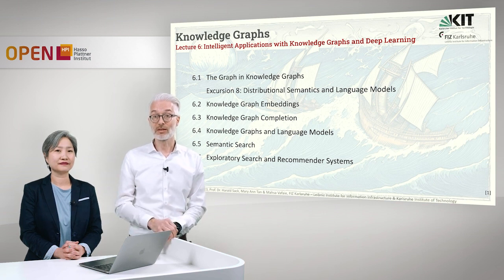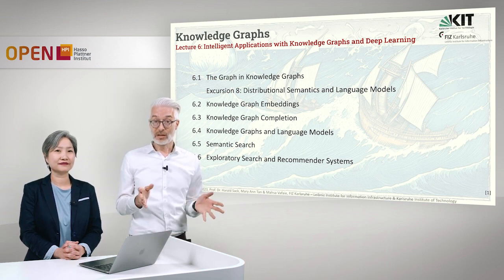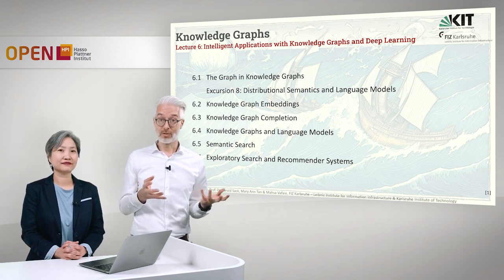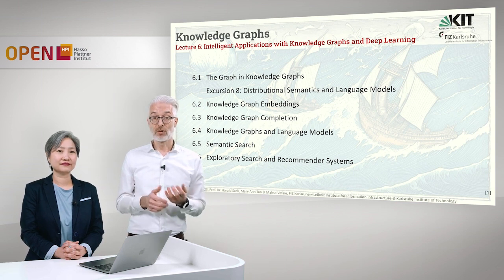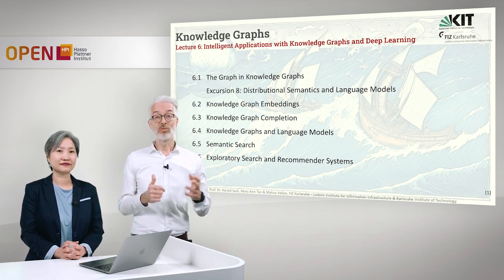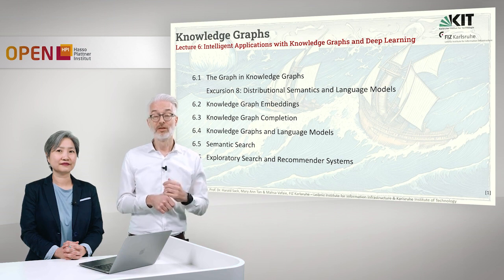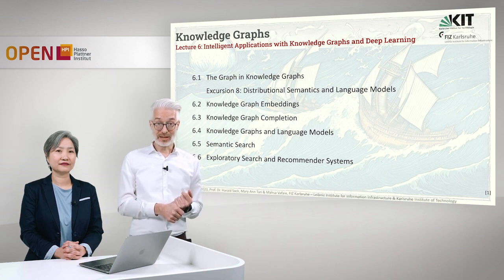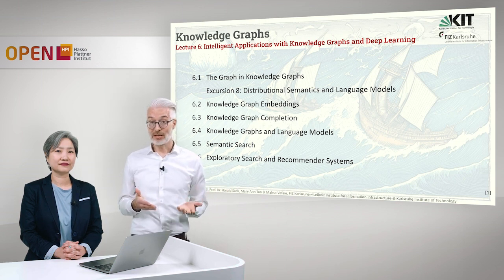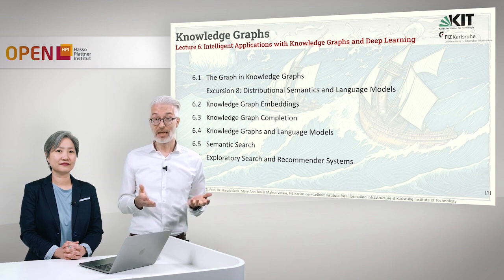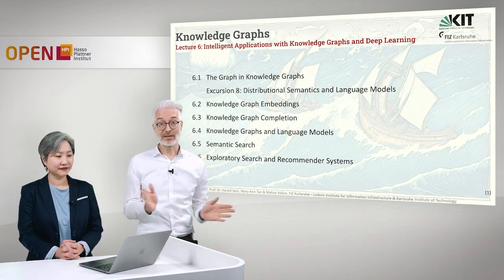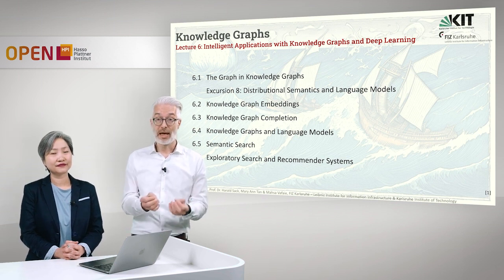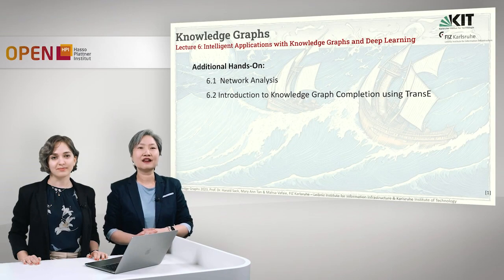Subsequently, we will look at two further applications which are rather popular and also powered by Knowledge Graphs. First of all is Semantic Search, which means we want to improve traditional search algorithms and information retrieval algorithms based on semantic information. And by leveraging this semantic information, we can further explore the entire search space, which leads us to the topics of exploratory search and recommender systems.